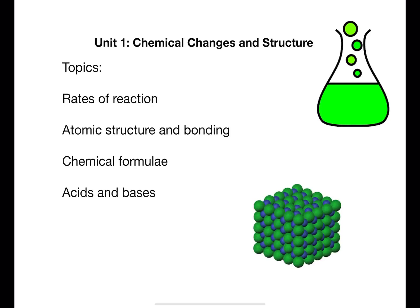The first unit is Chemical Changes and Structure. This unit covers the rates of reaction which looks at different ways to change and measure rates of reaction. It also looks at calculating average rate of reaction.